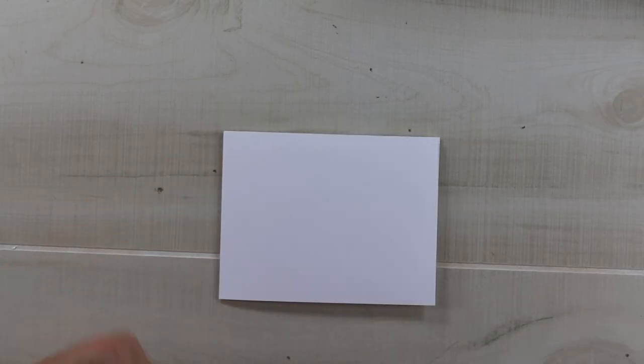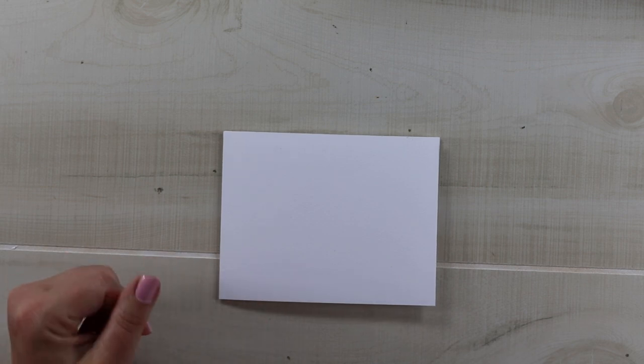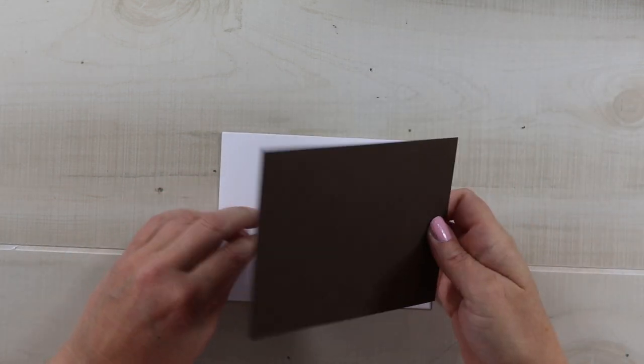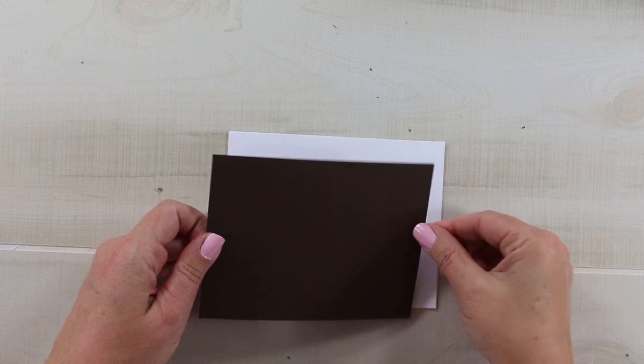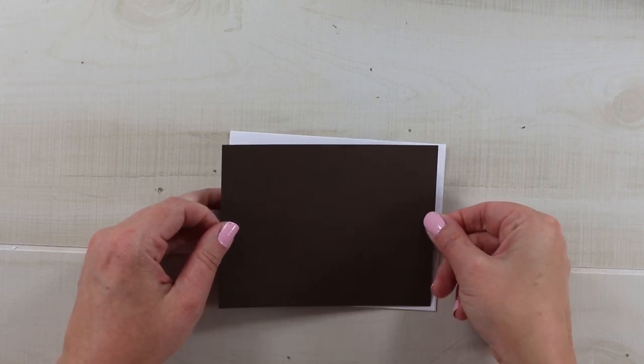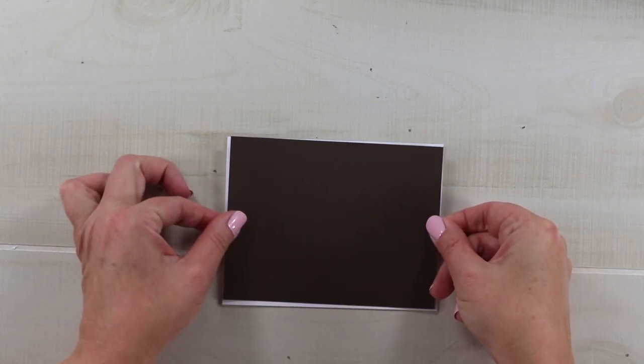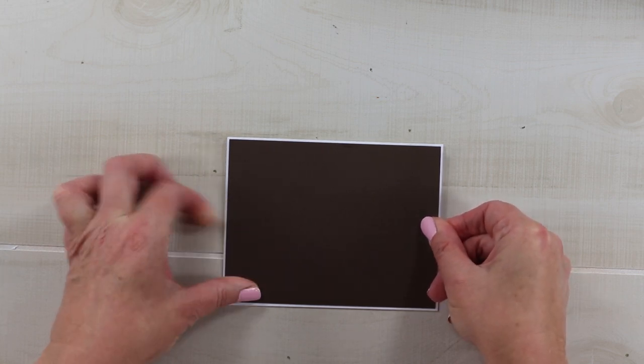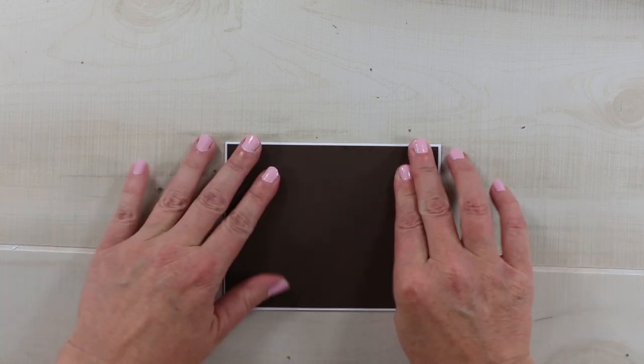So we're going to go ahead and cover our folded inserts and these have the same measurements as an A2 size card. I'm going to bring in my matting layer and remember this is only going to be on the front cover to reduce a little bit of the bulk on the inside.